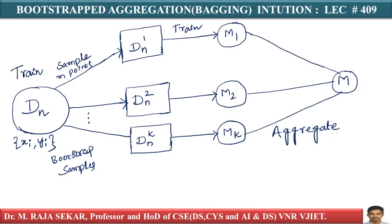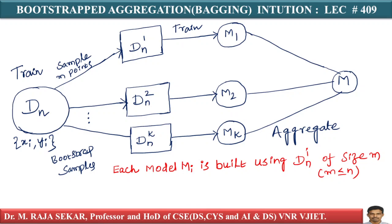Each of these models are built on different samples of data — not built on the total data. Each model m1 is built using dn1 of size m, where m is less than or equal to n. This basically means each model m1 has seen different subsets of data. This is very, very important. You build k models, and after building k models, you combine all these models into a big model — capital M. This is called aggregation.